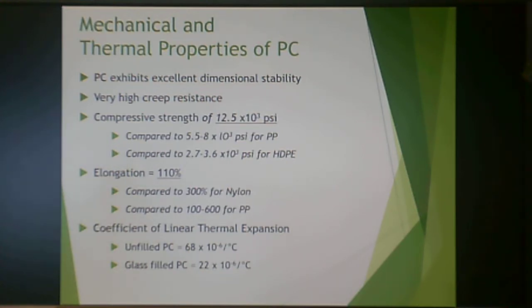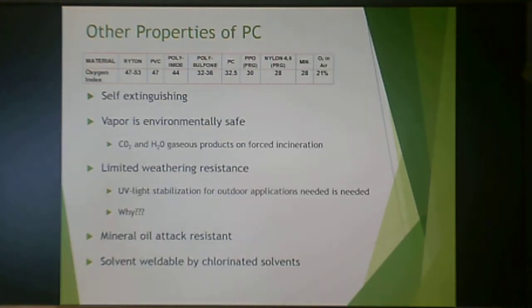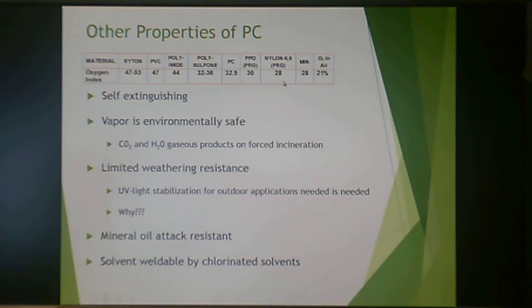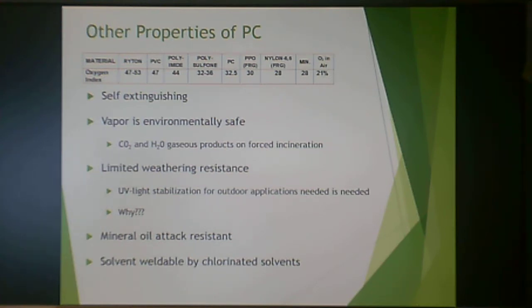Polycarbonate is a self-extinguishing polymer. The oxygen index shows it is more self-extinguishing than nylon 6-6. If forced to incinerate, the vapor produces carbon dioxide and water, making it environmentally safe — no dioxins or similar byproducts. However, it has limited weathering resistance, so UV light stabilization is required for outdoor applications, because the aromatic rings in the backbone enhance weathering — the same reason polystyrene weathers.